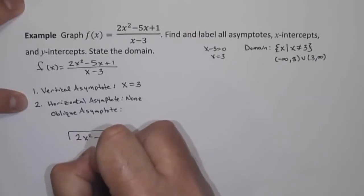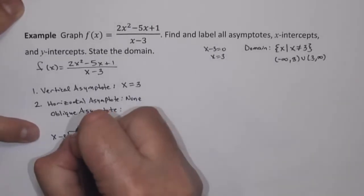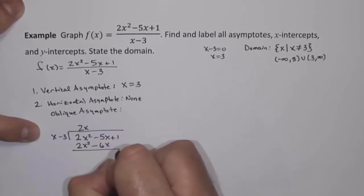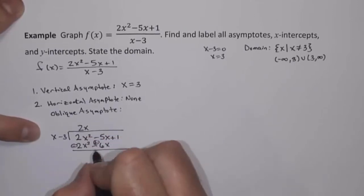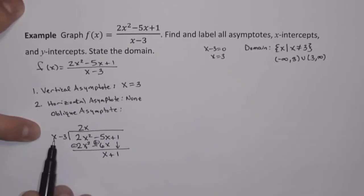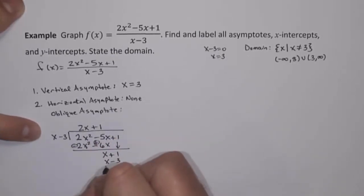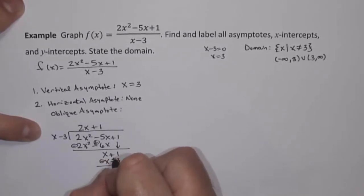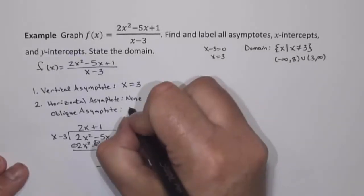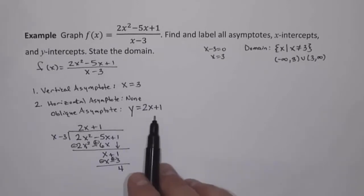I'm going to take 2x squared minus 5x plus 1 and divide by x minus 3. What do I multiply x by to get 2x squared? That's 2x. Multiply back: 2x times x is 2x squared, 2x times minus 3 is minus 6x. Distributing subtraction: 2x squared minus 2x squared goes away, minus 5x plus 6x is x, and drop down the plus 1. What do I multiply x by to get x? That's 1. Multiply back: 1 times x is x, 1 times minus 3 is minus 3. Distributing subtraction gives a remainder of 4. So our oblique asymptote is the quotient: y equals 2x plus 1.